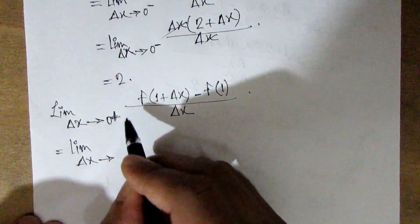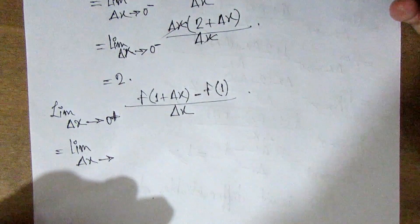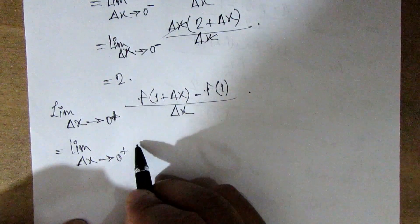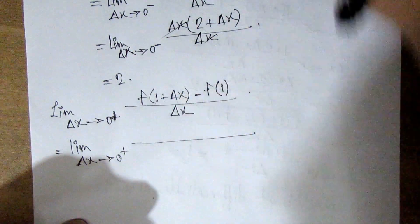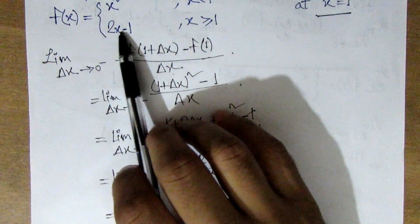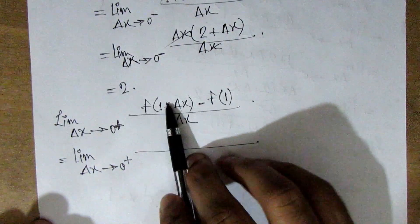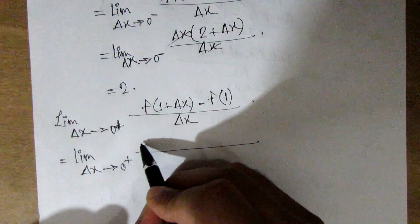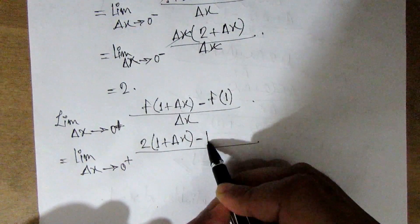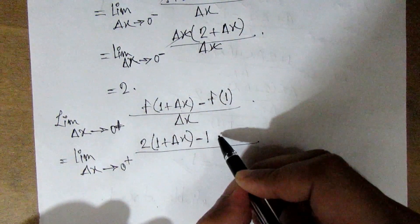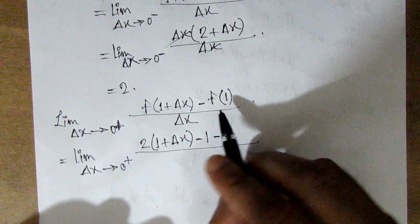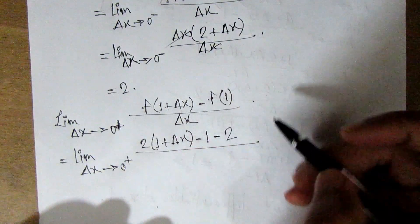This is positive. So 1 plus del x equal to 1 is equal to 1. So 2x minus 1 is equal to 2x minus 1 — meaning f(x) equal to 2x minus 1. Meaning a total of 2·del x equal to 1 is equal to 1. So a total of 2·del x equal to 1 plus del x. So 2·del x equal to minus 1.